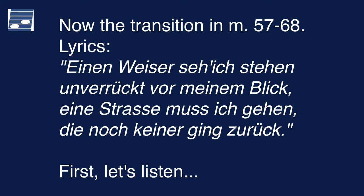The focus of this tutorial is on the amazing chord progression in the transition in measures 57 to 68. We have the lyrics. In translation: I saw a sign, steady in my view. I have to go a road from which nobody ever returned. Schubert here turns out to be an early trekkie and boldly goes where no man has gone before — in the harmonic sense, that is. But first, let's listen to this section.